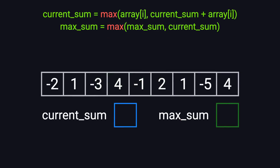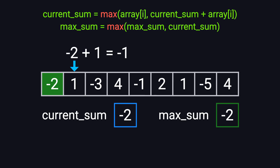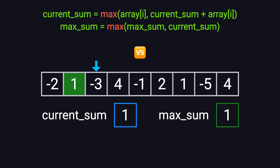Let's walk through the example step-by-step using Kadane's algorithm. The first number is -2. We haven't seen anything before, so both current_sum and max_sum are -2. Next is 1. Add 1 to current_sum: -2 + 1 = -1. Or just start fresh with 1. 1 is bigger, so we reset. current_sum becomes 1, and max_sum updates to 1. Next number, -3.